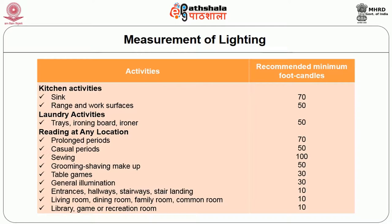The lighting requirement recommended for various activities: For kitchen sink we require 70 foot candles; range and work surfaces, 50 foot candles. For laundry activities, 50 foot candles. For prolonged reading at any location, 70 foot candles; for casual periods, 50 foot candles. For sewing, 100 foot candles. For grooming like shaving and makeup, 50 foot candles. Table games require 30 foot candles.